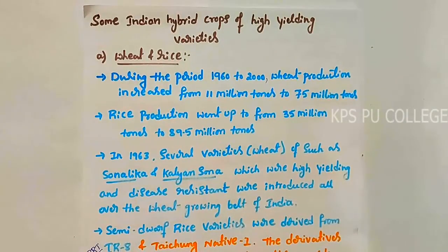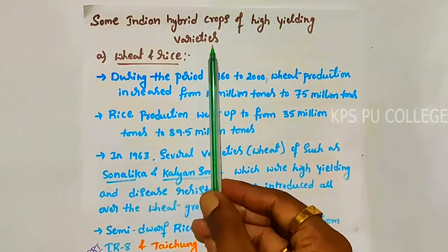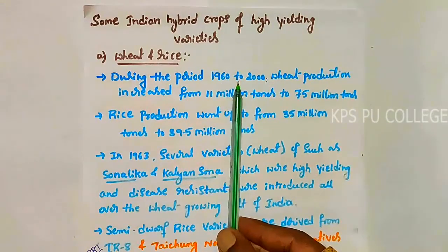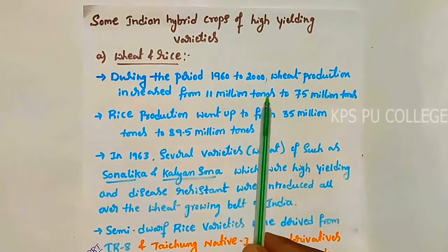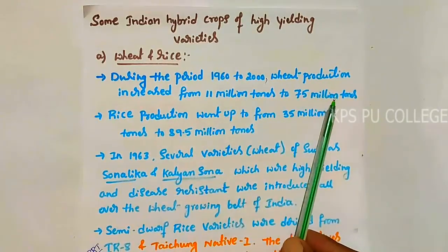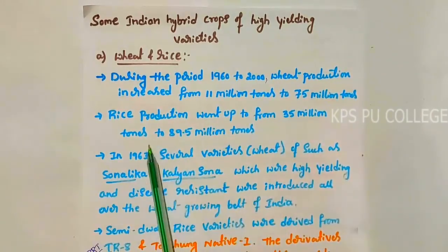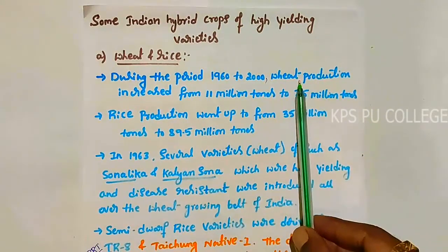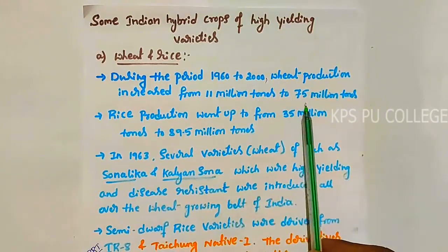Good morning students. After the completion of plant breeding, the next concept is some Indian hybrid crops of high-yielding varieties. The first one is wheat and rice. During the period of 1960 to 2000, wheat production increased from 11 million tons to 75 million tons, and rice production went up from 35 million tons to 89.5 million tons.